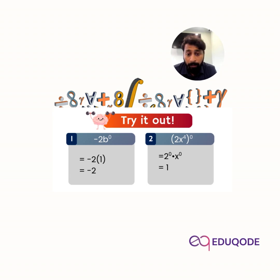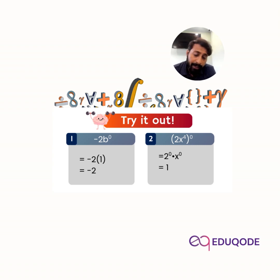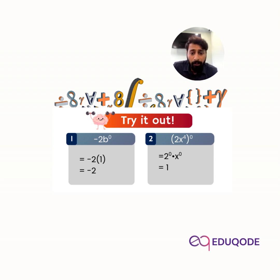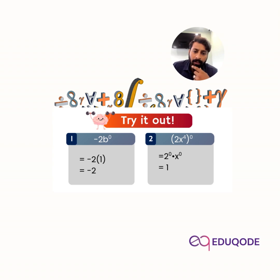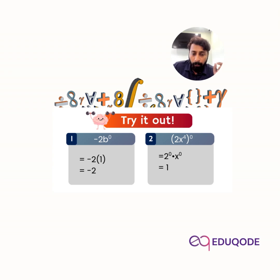Let's try: minus two multiplied by b power zero. Here, minus two is the coefficient, b is the base, and zero is the exponent. The coefficient stays the same, and b power zero equals one, so minus two multiplied by one gives the answer minus two.